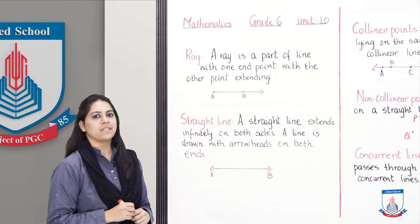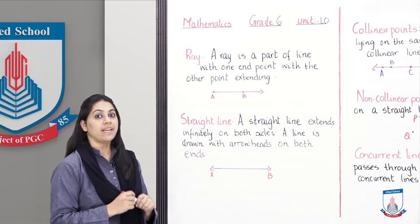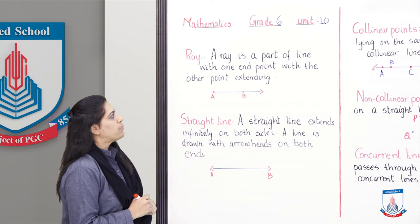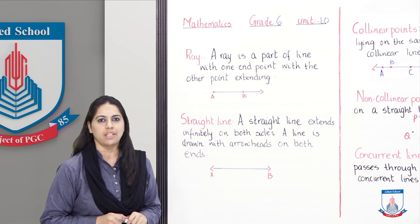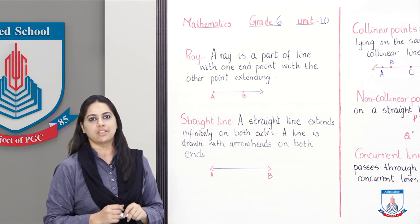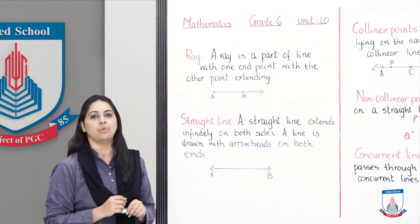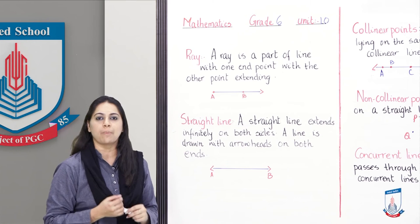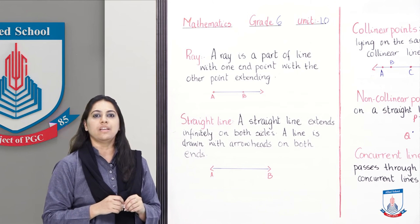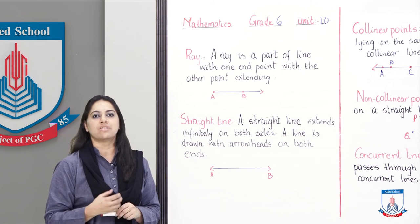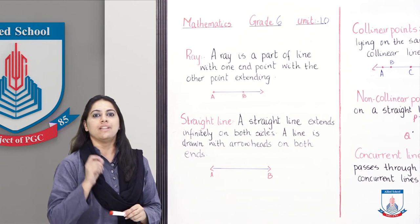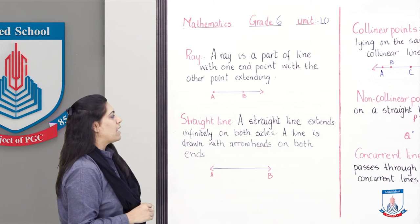Next definition is ray. A ray is a part of a line with one endpoint, with the other end extending infinitely. As you can see in the image, a ray has one endpoint and the line keeps going - you can see the arrow indicating it keeps going continuously. An example of a ray is sun rays - sun rays start from the sun as a source, have one endpoint, but keep going on and on.